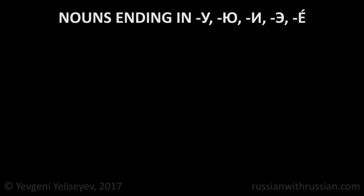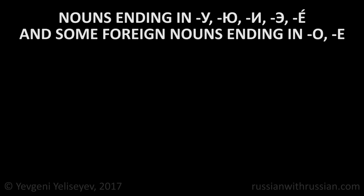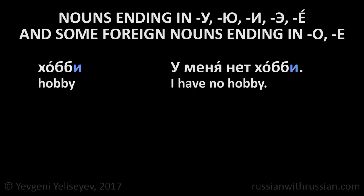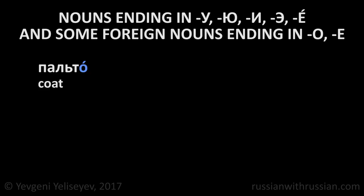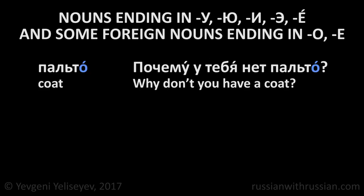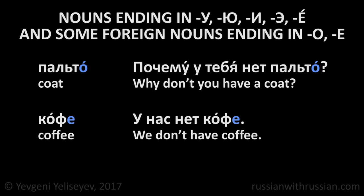Nouns ending in У, Ю, И, Э, a stressed Е, and some nouns of foreign origin ending in О or Е don't change their forms. Хобби. У меня нет хобби. I have no hobby. Резюме. У него нет резюме. He has no resume. Пальто — coat. Почему у тебя нет пальто? Why don't you have a coat? Кофе. У нас нет кофе. We don't have coffee.